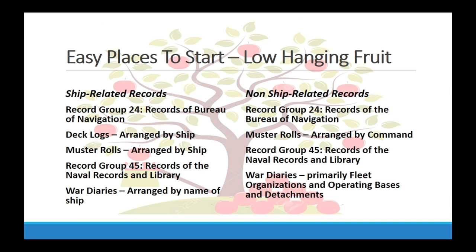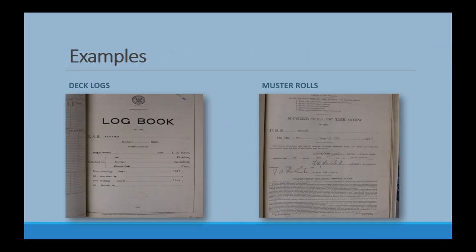Non-ship records follow a similar format. In Record Group 45 — Records of the Naval Records and Library — there are war diaries, similar to World War Two war diaries. These are reports to the Chief of Naval Operations covering the activity of a command, whether a ship or shore station. Examples shown include the logbook cover, muster roll cover, and an excerpt from the war diary for the USS Flusher.